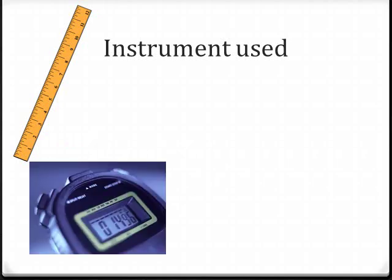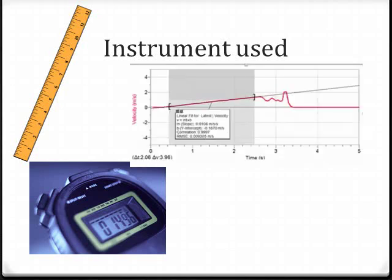Other examples include a stopwatch — its smallest unit of measurement is a millisecond, so its instrument uncertainty is plus or minus one millisecond. Or if you're using Logger Pro and calculating acceleration by finding the slope on a velocity-time graph, you'll notice the slope shown is 0.6106. That's four digits, meaning the instrument uncertainty is 0.0001 meters per second squared.